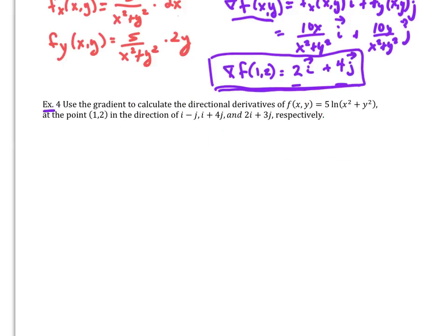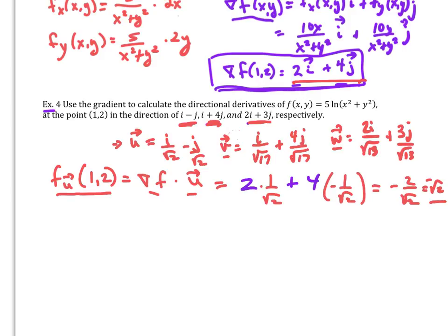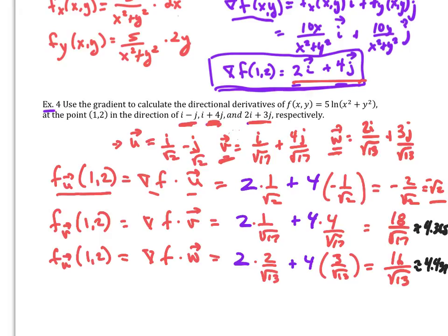For example four, using the same function, we find directional derivatives in the direction of each of several vectors. Each vector is first unitized. For the directional derivative in the direction of u from point (1, 2), we take the gradient (2i + 4j) and dot it with the unit vector u, getting negative √2, which is about −1.414. Computing the same for vectors v and w yields approximately 4.365 and 4.438 respectively.